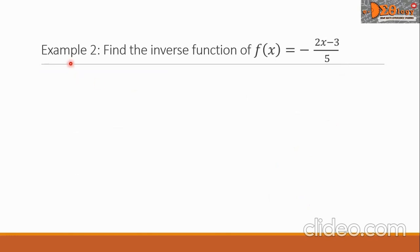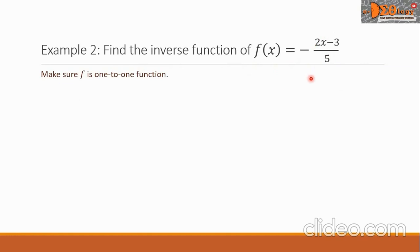Let's have Example 2. Find the inverse function of f of x equals the negative fraction with numerator 2x minus 3, all over 5. First, let us make sure the function is one-to-one. This function is linear, so the graph is a line. The domain is all real numbers and the range is also all real numbers. If we put a permissible value for x, a unique value for y will come. So this function is a one-to-one function. Now we are going to solve for x and write x equals f inverse of y.